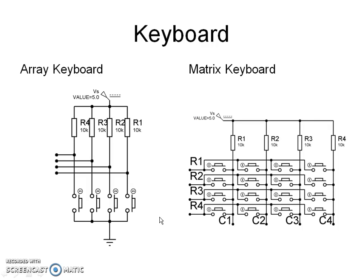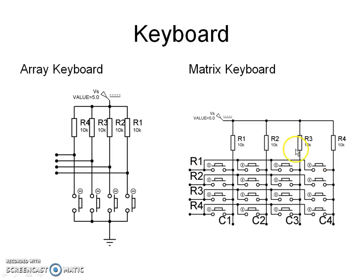There are two types of keyboards: array keyboard and matrix keyboard. A four-key array keyboard has four wires and requires four port pins for connection. A 16-key matrix keyboard has eight wires and requires eight port pins for connection.